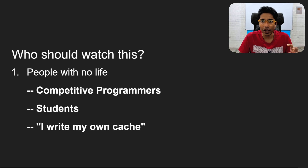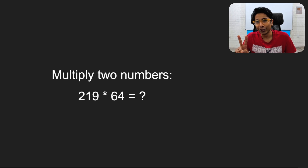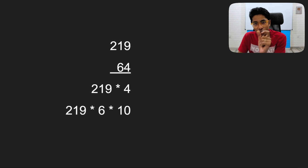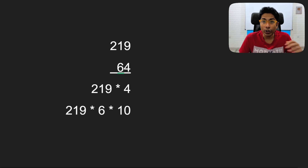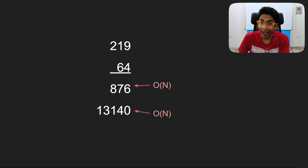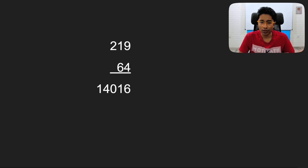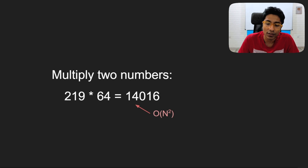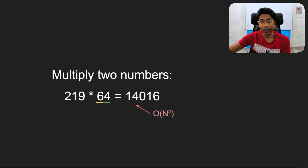Let's say you have two numbers and you have to find the result of multiplying them. The high school mathematics way of doing this is to write them down and for each digit multiply the other number by that digit — so 4 into 219 and 6 into 219 (because 6 is actually 60, so you multiply the result by 10), then add them together. The result is 14,016. The time complexity of this is O(n²) because for each digit you multiply every digit of the second number.